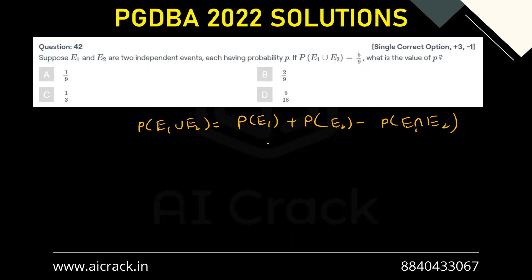Now, P(E1) and P(E2) both are p, and so that would become p². And we know that in case of independent events, P(A ∩ B) equals P(A) dot P(B). So that would become p dot p, and that is given as five by nine. So we have got the equation 18p minus 9p² equals five.